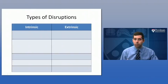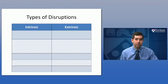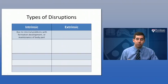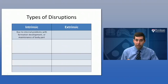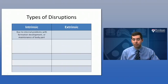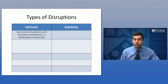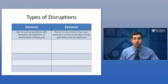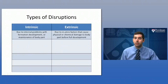Let's compare and contrast what we talked about last lecture with this lecture, covering different types of disruptions of the upper limb. Intrinsic disruptions are due to internal problems with the formation, development, or maintenance of that body part. Extrinsic disruptions are generally caused by in utero factors — things that occur while the child is developing in the uterus — that could cause either physical or chemical damage to that body part before it's fully developed.